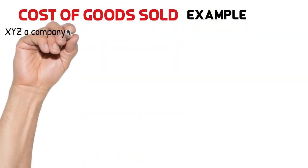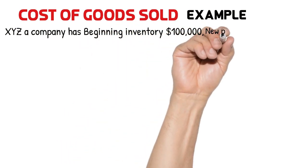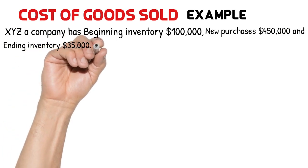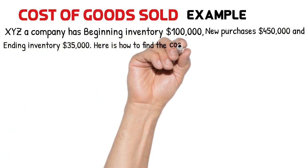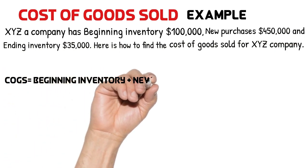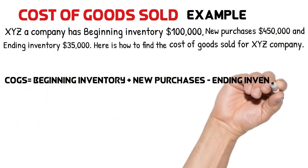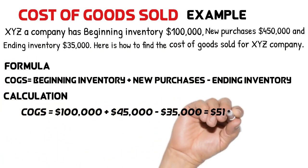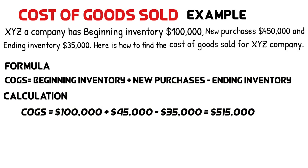Let me explain another example. XYZ company has beginning inventory of $100,000, new purchases of $450,000, and ending inventory of $35,000. Here is how to find the cost of goods sold for XYZ company: we add beginning inventory $100,000 with new purchases $450,000 and subtract ending inventory $35,000. We get the cost of goods sold amount of $515,000.